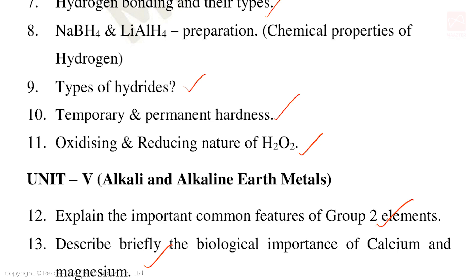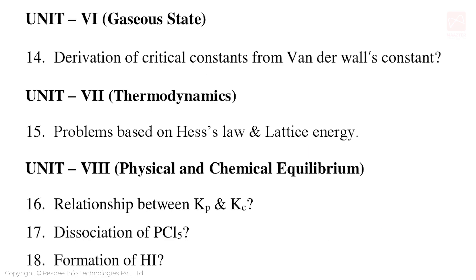Unit 5: Alkali and Alkaline Earth Metals — explain the important common features of Group 2 elements (very important), biological importance of calcium and magnesium (very important). Unit 6: derivation of critical constants from Van der Waals constants (very important 5 mark question).